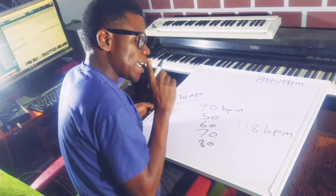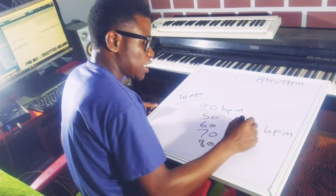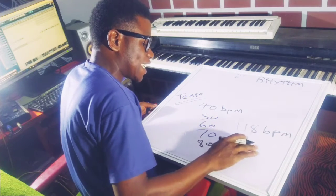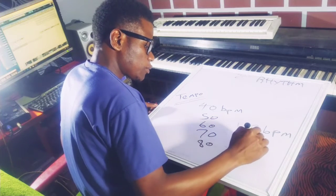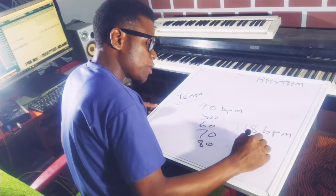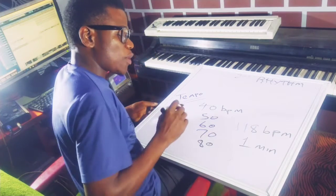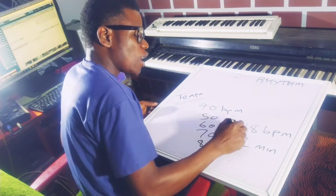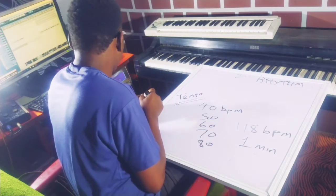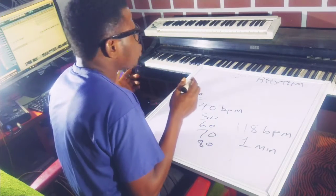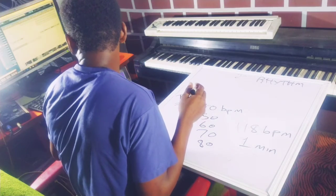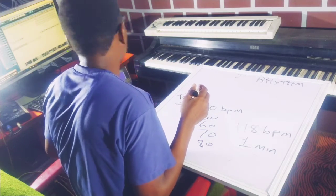So this is 118 tempo — 118 BPM. What that simply means is that in one minute, you are going to have 118 beats. In one minute, 118 beats per minute. Let me play the metronome so you can hear how that works.